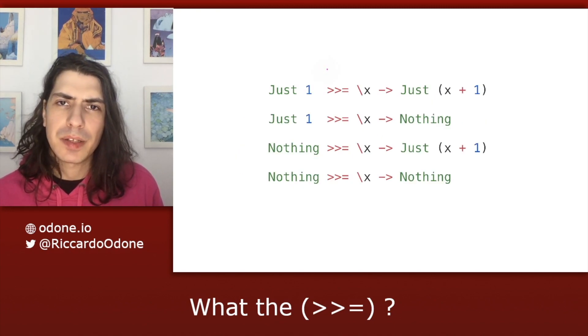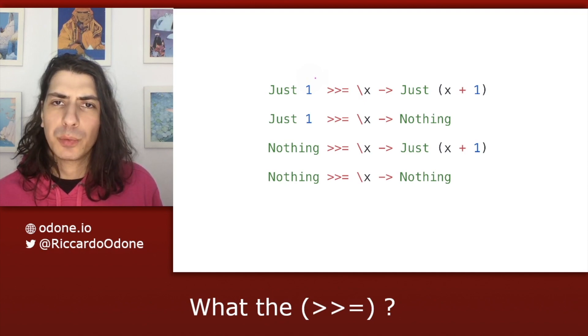Let's take Maybe as an example and see how bind behaves for Maybe. Now, we saw previously that we have one discriminator, which is the value on the left. And in case of Maybe, what we do is that whenever we have a Just, we go on and apply the step function. Whenever we have a Nothing, we short circuit and return Nothing right away.